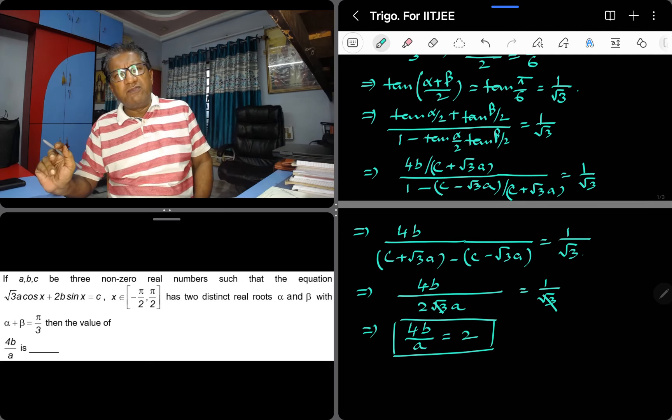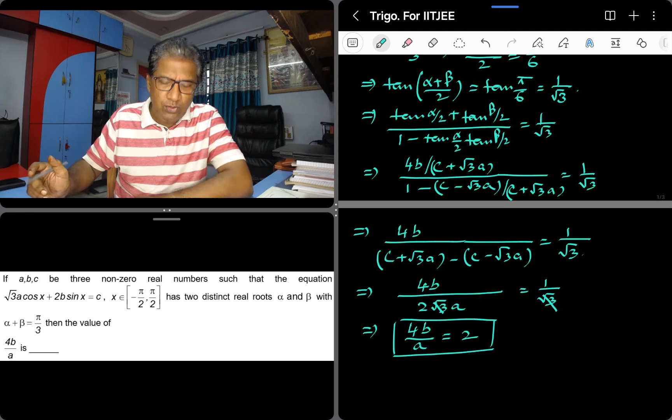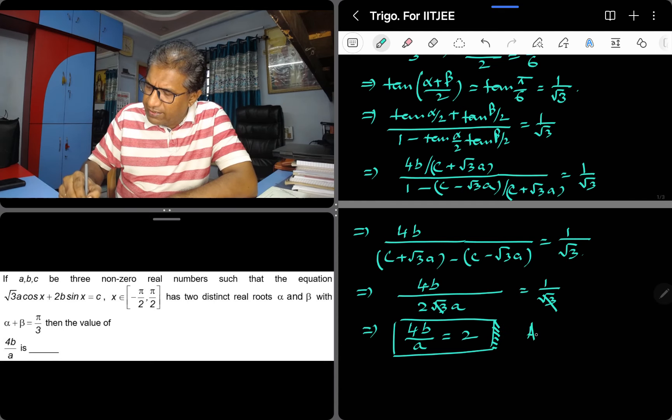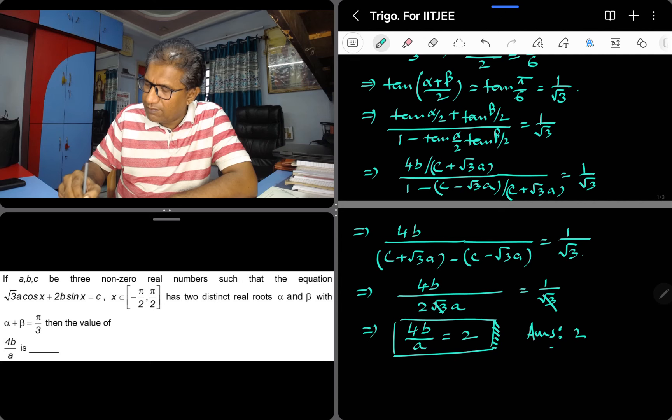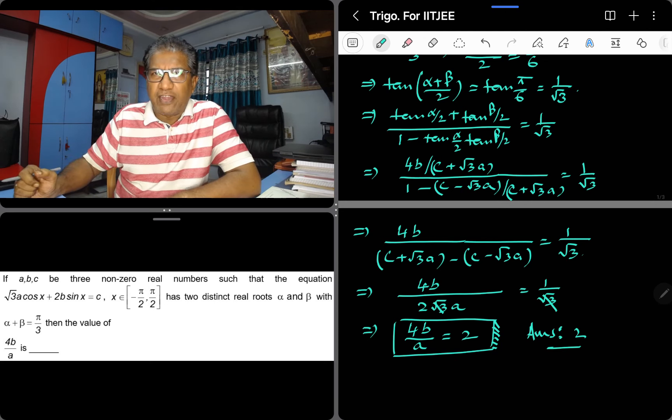Therefore the required value of 4b over a is 2. Hence the answer for this question is 2. Is it clear to all? Okay, see you in my next video.